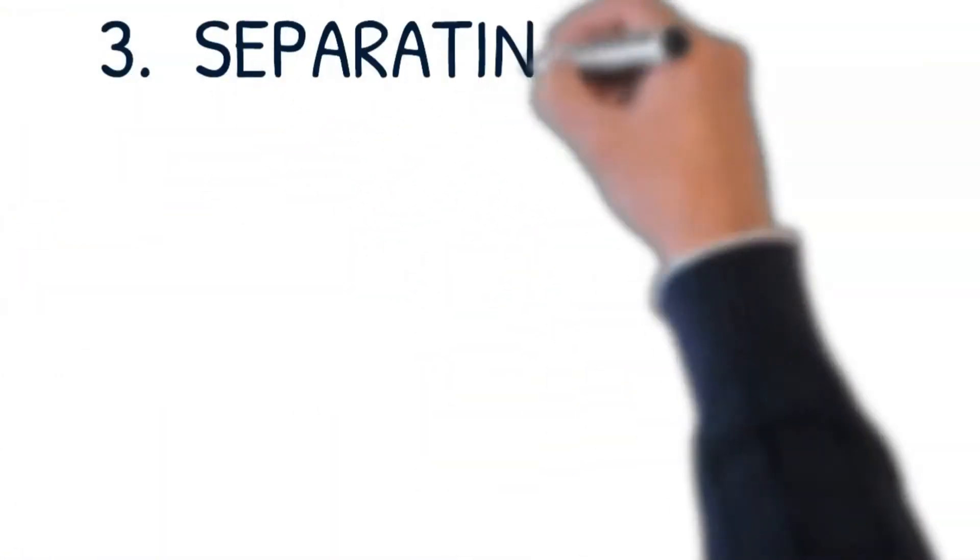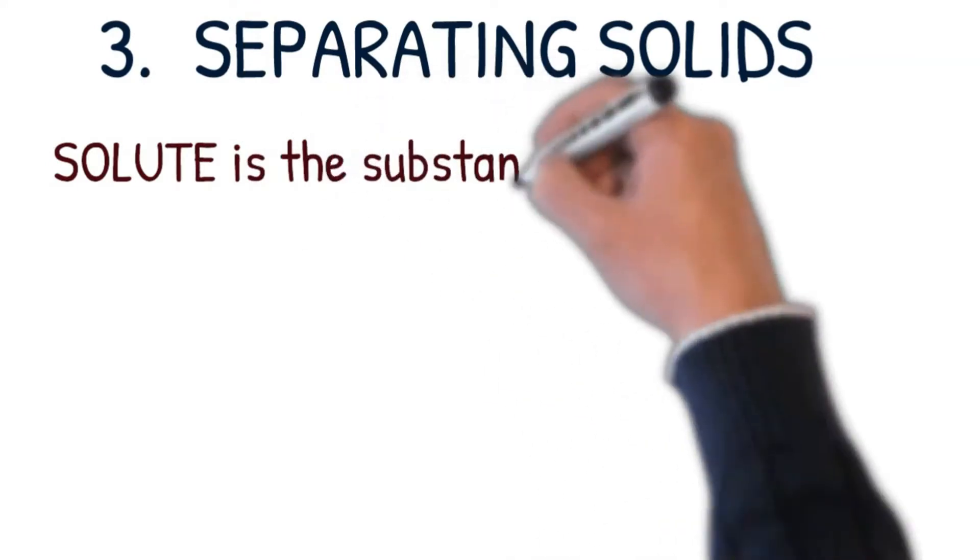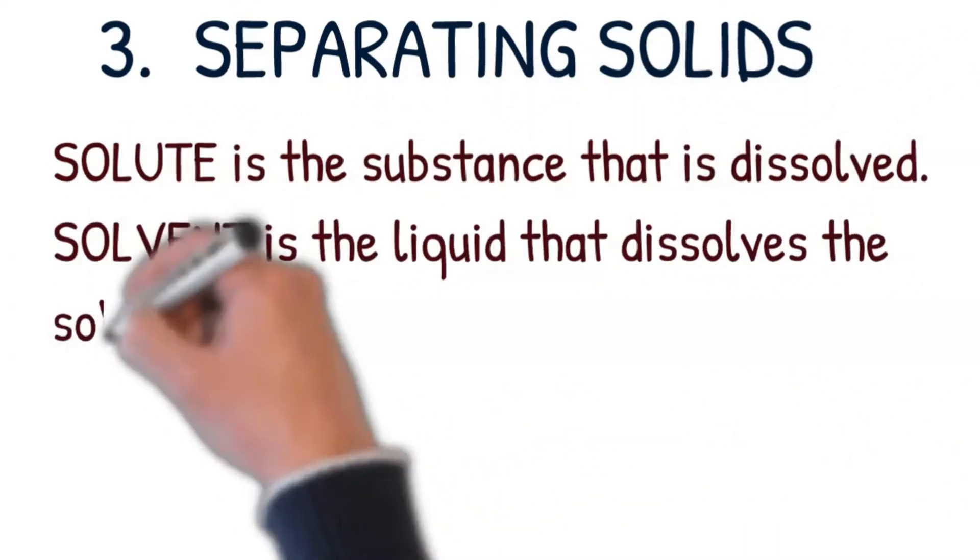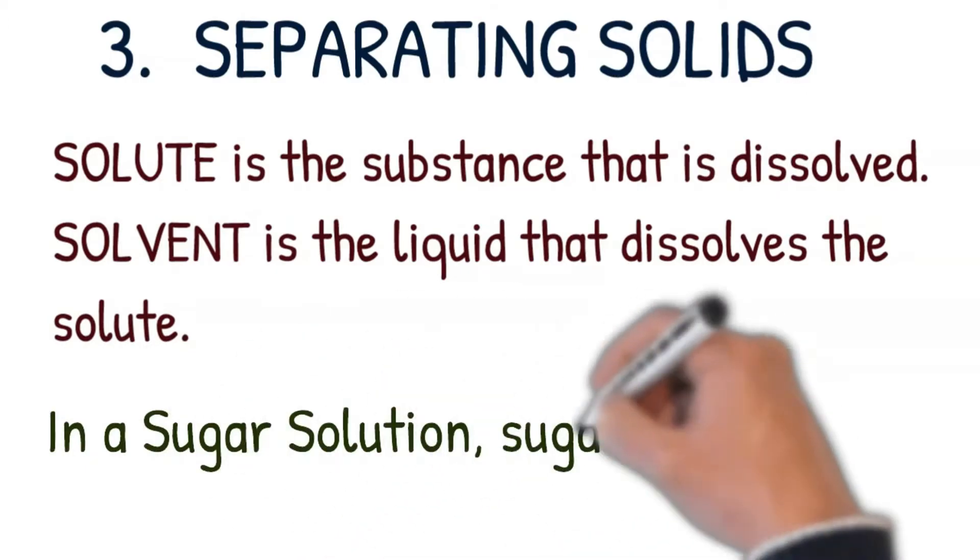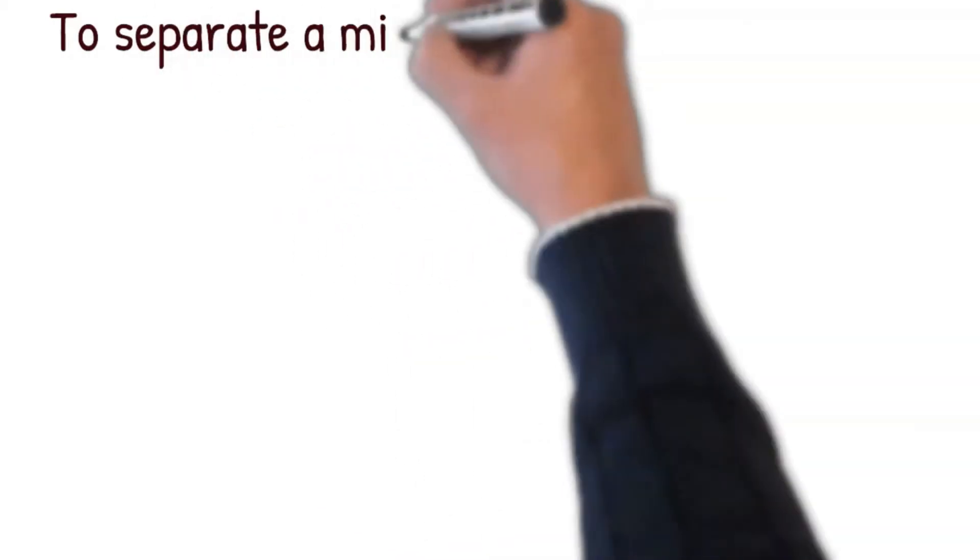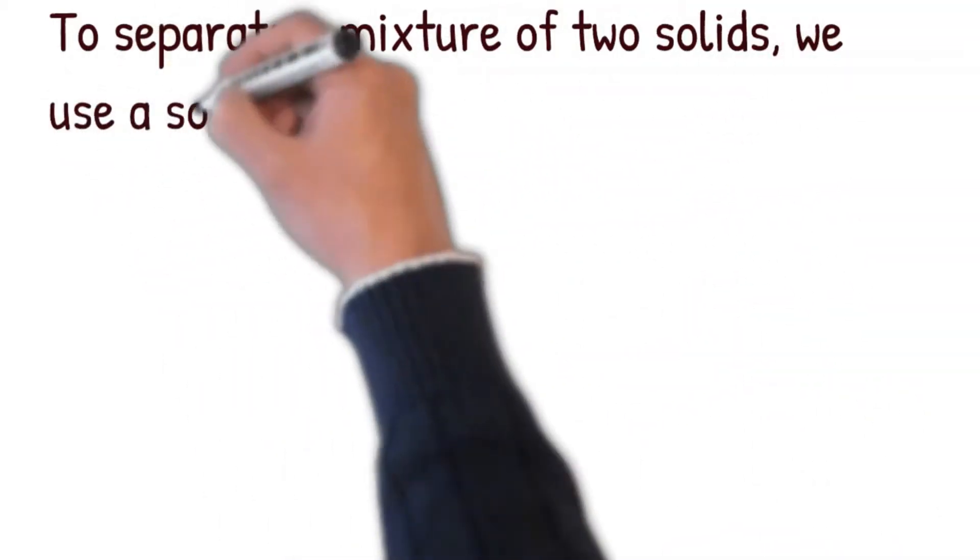Separating solids. Solute is the substance that is dissolved. Solvent is the liquid that dissolves the solute. In a sugar solution, sugar is the solute and water is the solvent. To separate a mixture of two solids, we use a solvent in which only one solid is soluble and the other is insoluble.